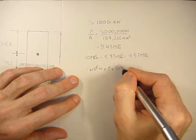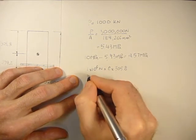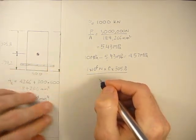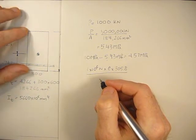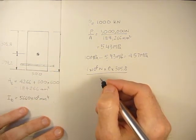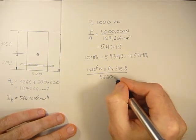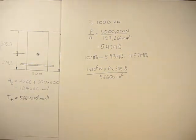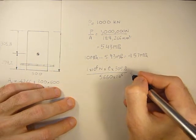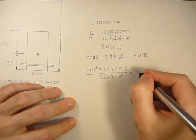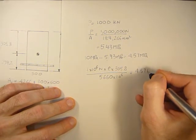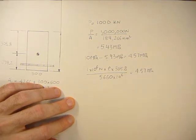Again, the I won't change either. The section is fully effective. So we can use 5660 times 10 to the sixth and solve for E based on a stress of 4.57 MPa.